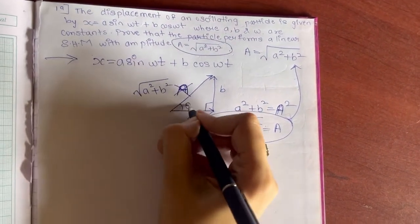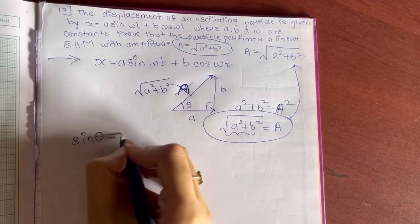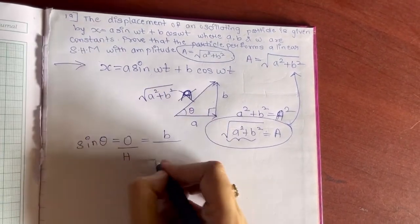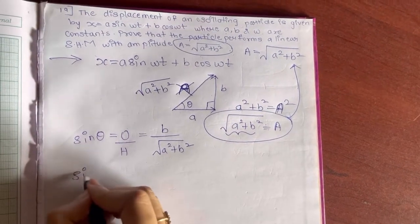Now you can take this as θ. Sin θ is opposite upon hypotenuse. So which value you have in the opposite, that is b, and hypotenuse you have √(a² + b²). So it is sin θ which is equal to b/√(a² + b²).